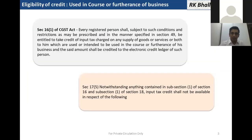For checking whether the input tax credit will be allowed or not, we have to check the section which allows for input in the CGST Act. Section 16(1) says that every registered person shall be eligible to take the input tax credit on any supply of goods or services or both to him which are used or intended to be used in the course or furtherance of his business. So, of course, a factory premises or office which we are constructing is in the course of furtherance of the businessman's business.